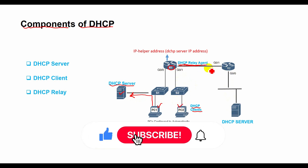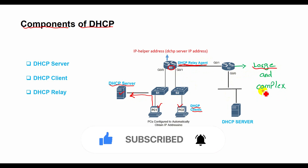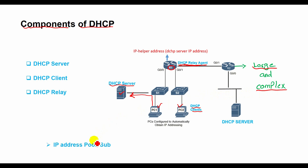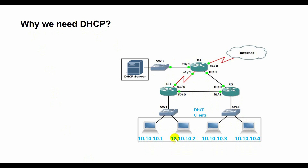Relays are typically used when an organization has to handle large or complex networks. Other components include the IP address pool, subnet mask, lease, and DHCP communication protocol. Every device on a network must have a unique unicast IP address to access the network and its resources, which is why understanding DHCP is important.